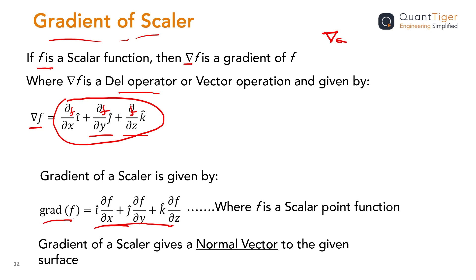So when we find the gradient of any scalar function, what we get is a normal vector to the surface — normal meaning it's perpendicular to the given surface. The quantity we get after finding the gradient of a scalar function is a vector, because if you see, there is i-cap, j-cap, and k-cap, which represent directions in x, y, and z axes. Remember: if you take a gradient of any scalar quantity, you will get a vector quantity.